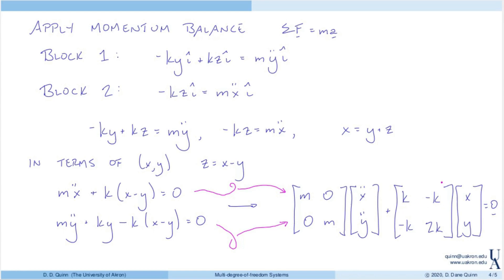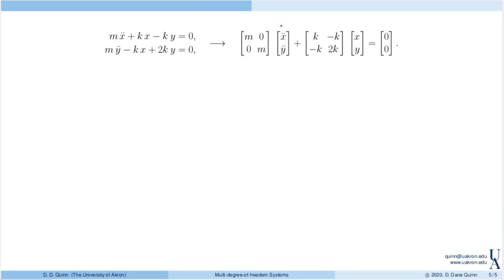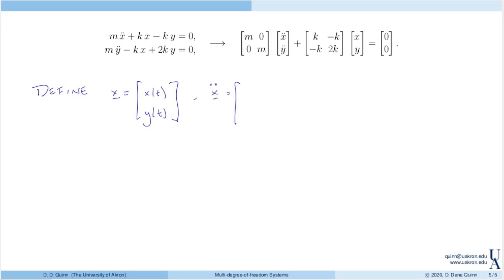We can write these two equations in matrix form, which will be very useful later. Defining the vector x as the coordinates [x, y]ᵀ, with x-double-dot as the corresponding acceleration vector, the full system is written compactly as: M·x-double-dot + K·x = 0, where M is the mass matrix [m, 0; 0, m] and K is the stiffness matrix [k, −k; −k, 2k].